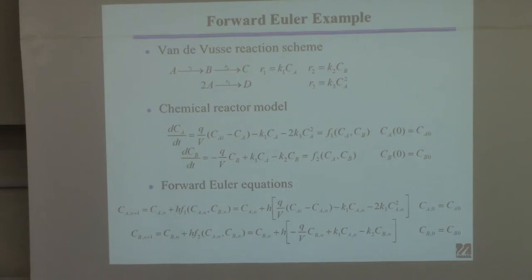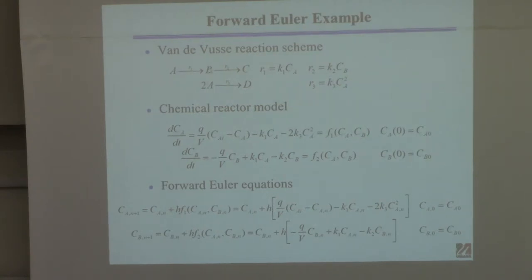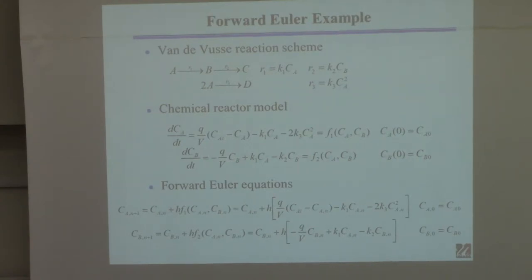To put some meat on this, here's an example from kinetics. There's a reaction scheme where reactant A forms B, then B reacts further to form C (rates R_1 and R_2), and there's a side reaction where 2A goes to D. The classic problem is you want to produce B: A produces B, but B unfortunately further reacts to C, and there's also a side reaction taking A to D.